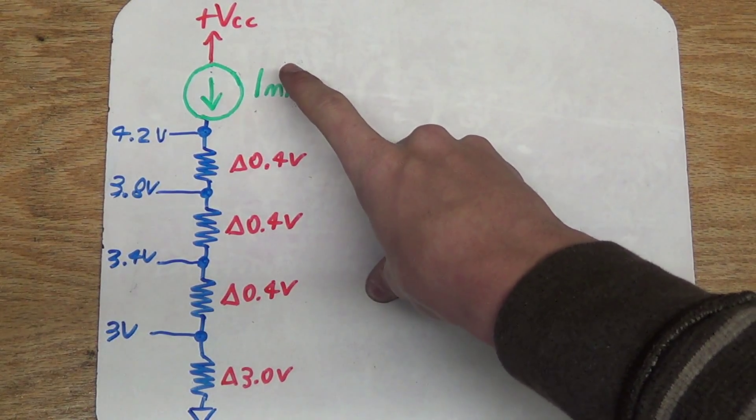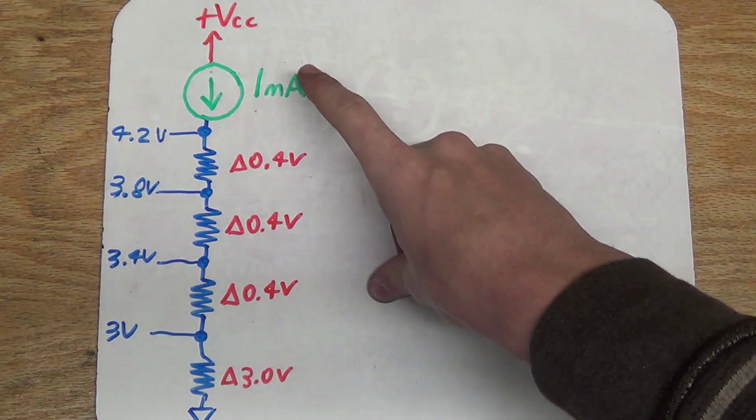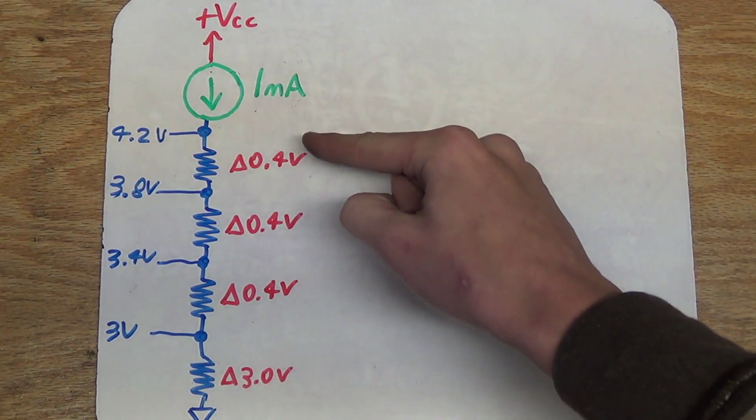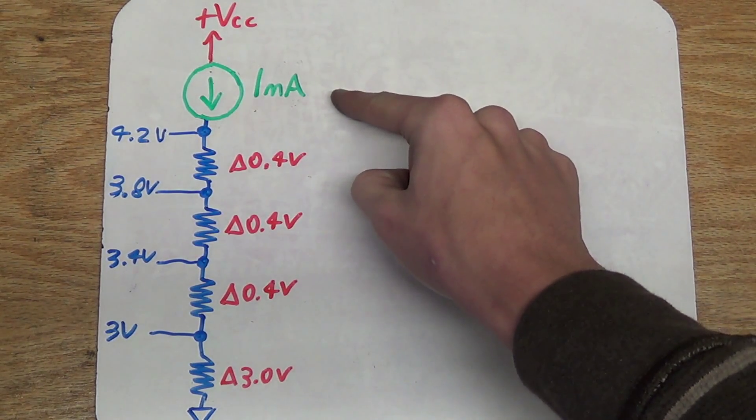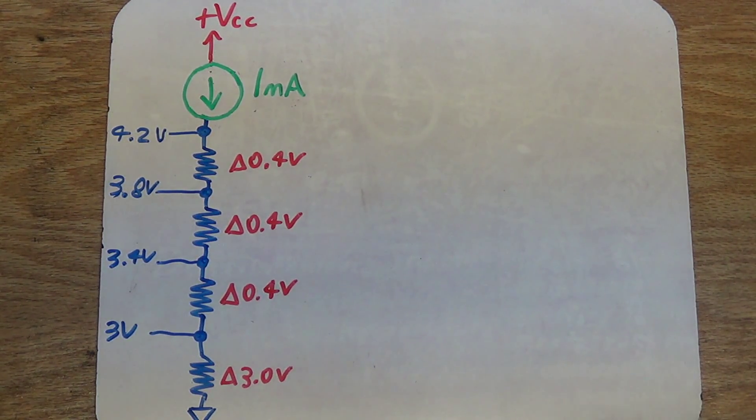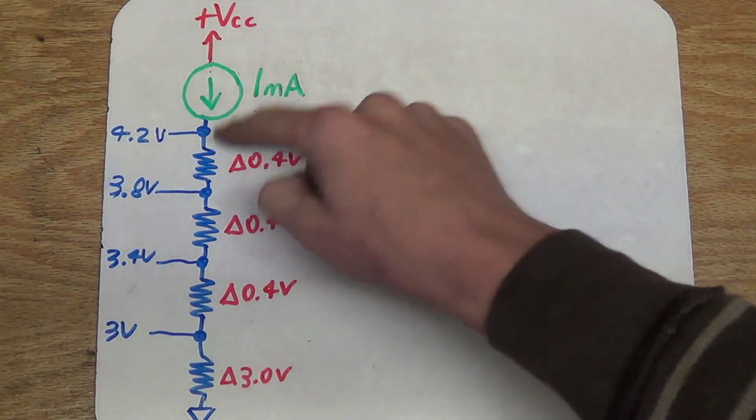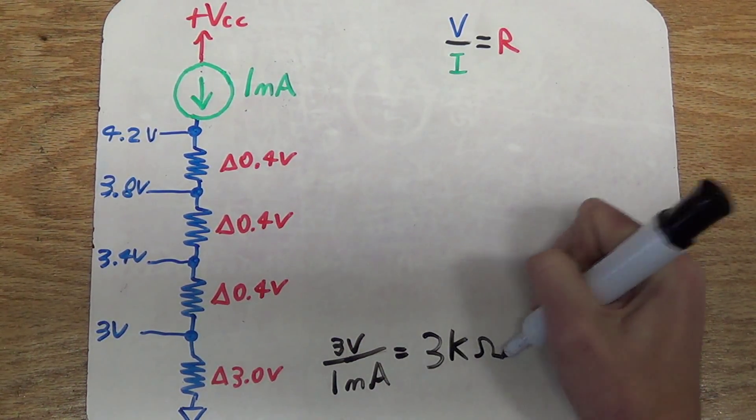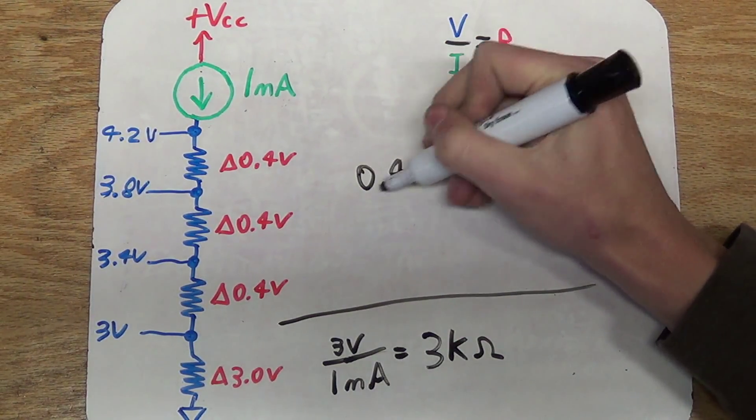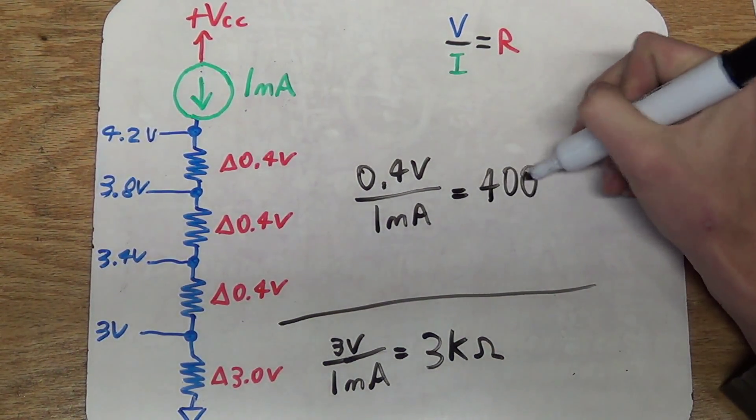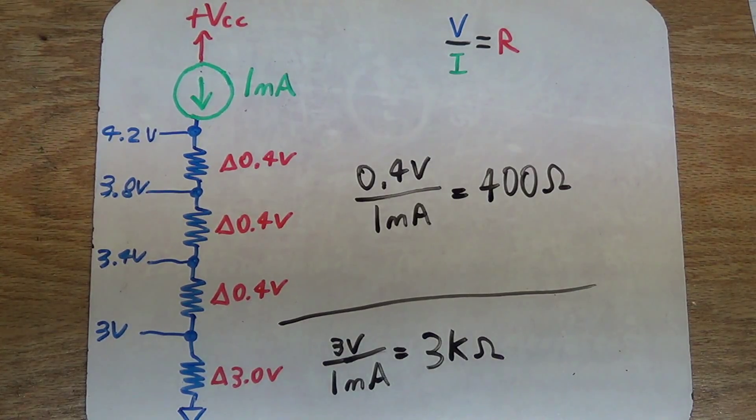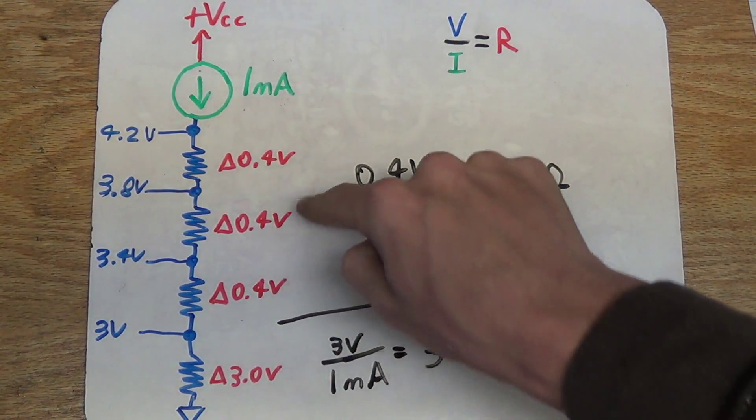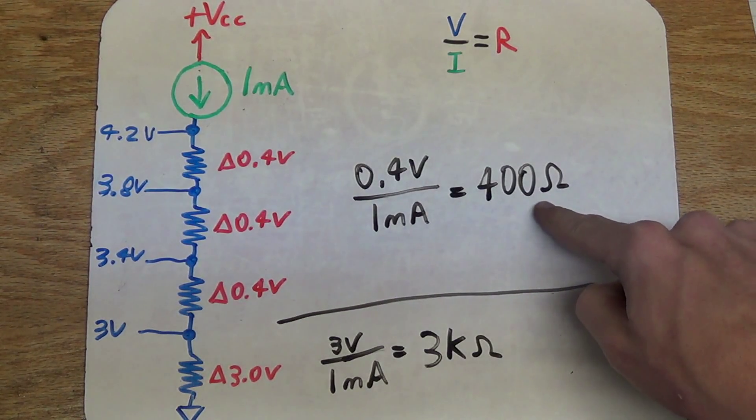Now right here, I've drawn out just the reference portion of the previous circuit. You can see here I've written out my voltages, and of course the voltage drops across the resistor with the 1 milliamp current source. So as it turns out, calculating these resistor values is actually very easy. Alright, here's the values that I've calculated. We're gonna need a 3 kilo ohm resistor for down here, and then for the rest of these 3 resistors, we're gonna need 400 ohms of resistance.